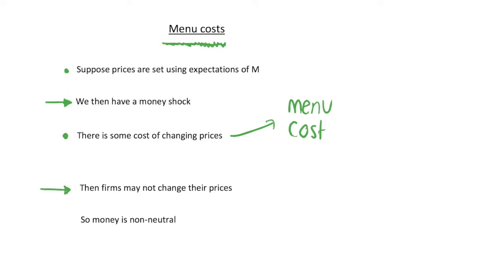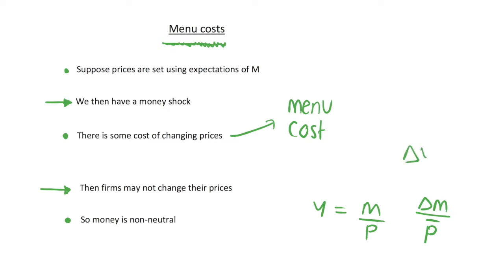The implication is that firms might not change their prices if the menu cost is larger than the profit they would gain from changing price. If we don't have flexible prices due to this, then money supply would not be neutral — a change in the money supply might have some impact on aggregate output. If aggregate demand is given by m over p, and p is constant but m changes, then we get a change in output.